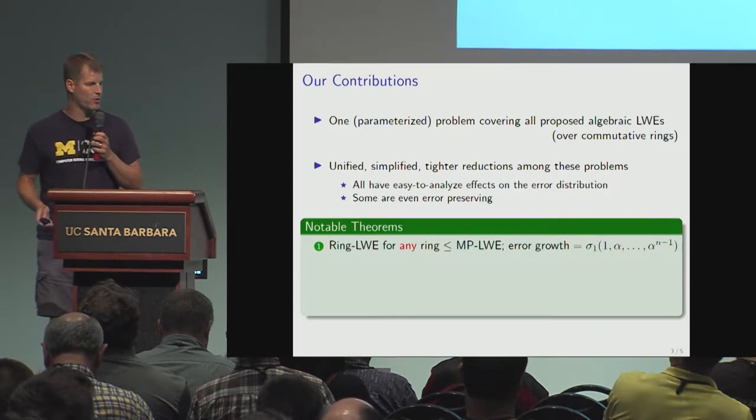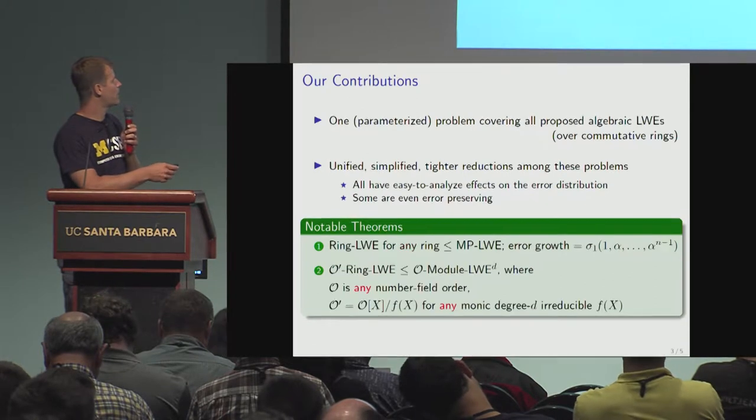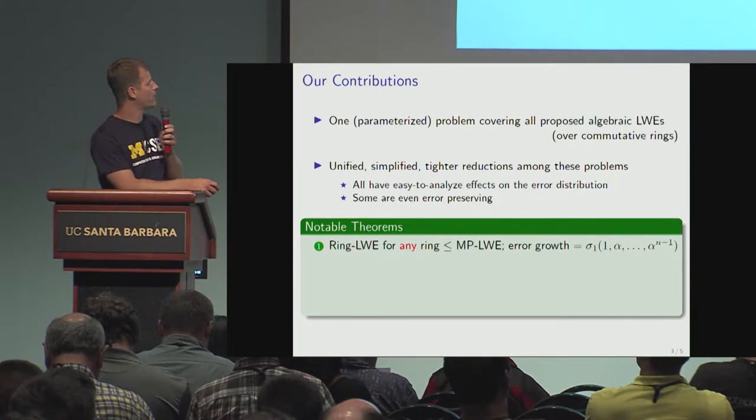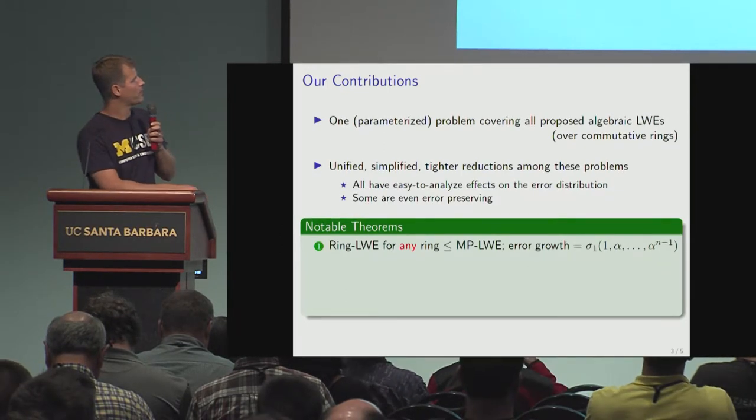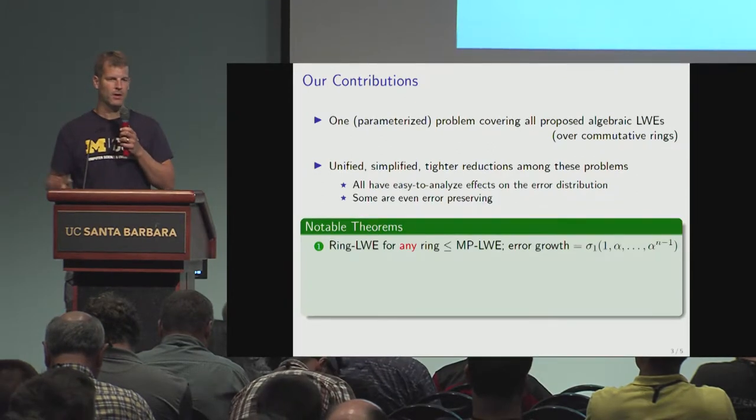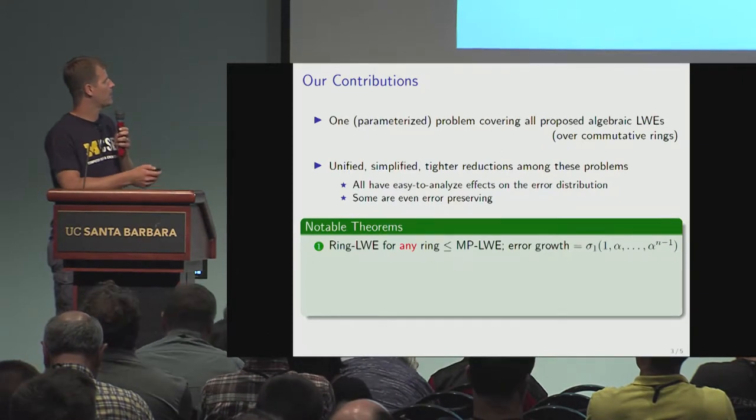A couple of example theorems we get: You can prove that ring LWE in essentially any ring reduces to middle product LWE with error growth that's the spectral norm of powers of a certain element in the original ring.